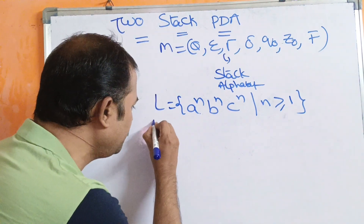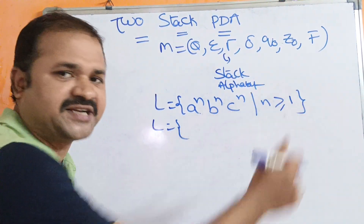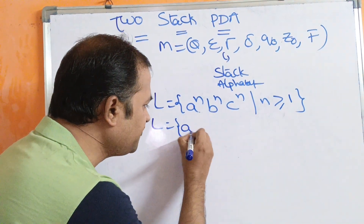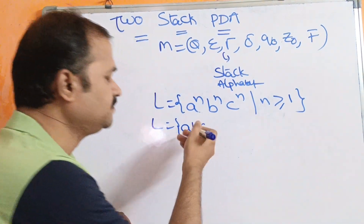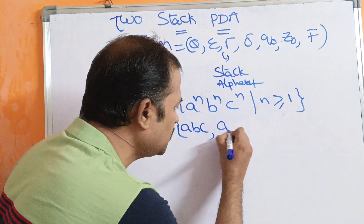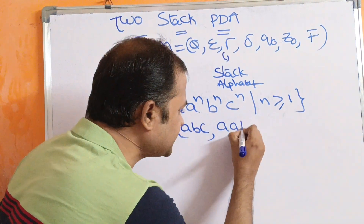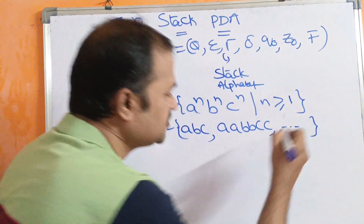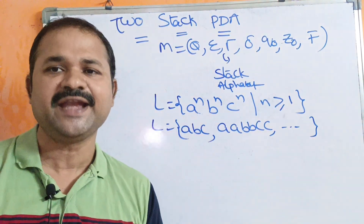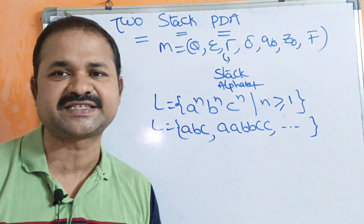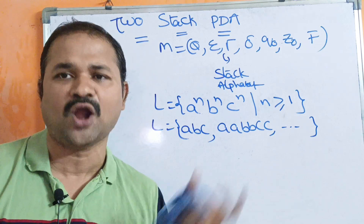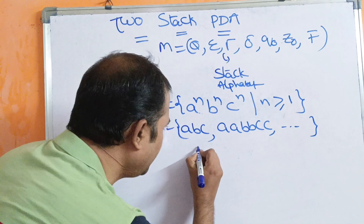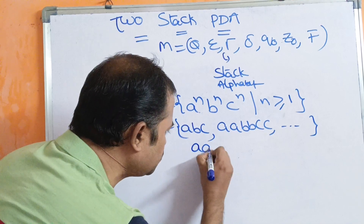Let us see the possible strings. N starts from 1. If N equals 1, then one occurrence each of A, B, C. If N equals 2, two occurrences each of A, B, C. We can take N number of strings. There are two logics to handle this language.